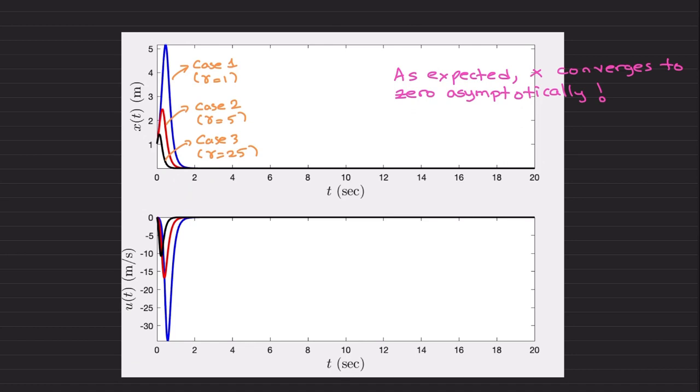Later in the series, after we extend these results to higher dimensional systems, we're going to address this poor transient performance that may happen in adaptive control laws. As you see, as you increase gamma, you're achieving better and better performance. As you increase the learning rate, you learn the effect of the uncertainty and cancel its effect. This is why gamma is called the learning rate.